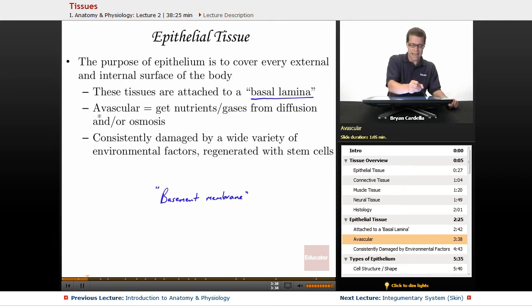Also epithelium is avascular. It gets nutrients and gases from diffusion and or osmosis. What does avascular mean specifically? Vascular, let's take the cardiovascular system, always has to do with transporting fluids. For instance, a vascular plant like a tree is called that because the tree is able to suck water up and get it up through osmosis to the tippy tops of its leaves. That's a vascular plant. We are vascular because we're able to move fluids against gravity all throughout our body.